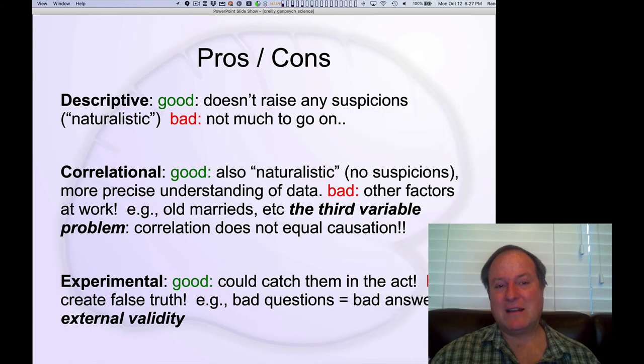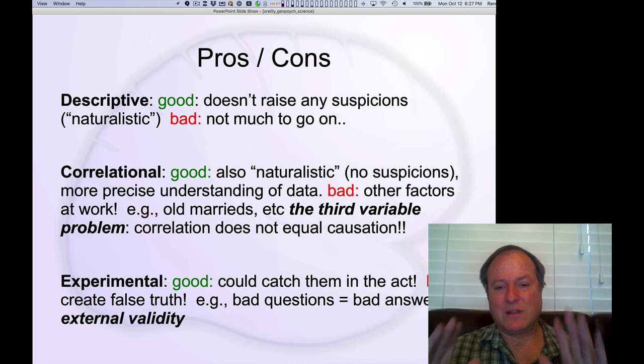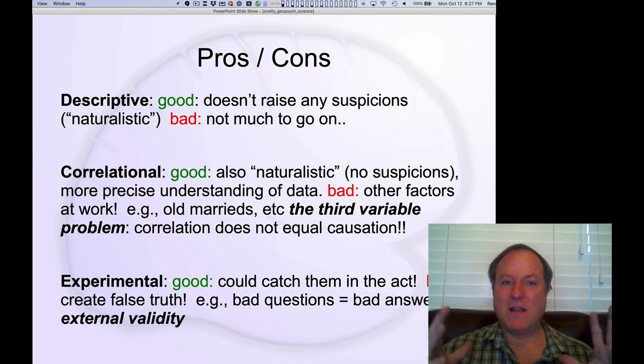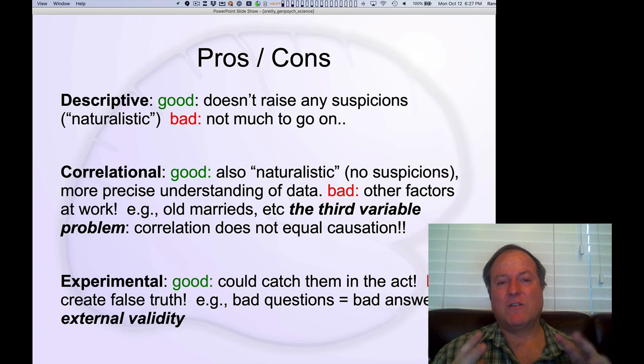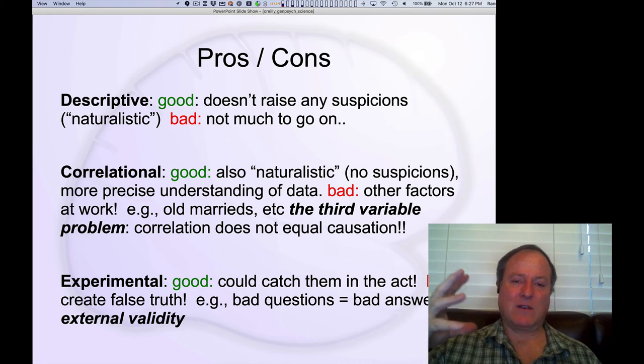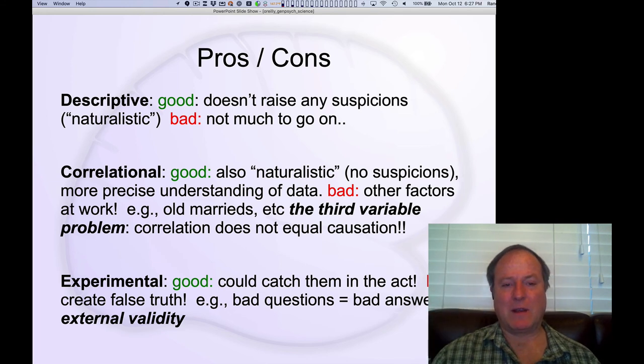So, here's the summary again. If you use these descriptive approaches, you don't disturb. You don't raise suspicions. But you may not have that much to go on. The correlational approach is also somewhat naturalistic. And it gives you a more precise understanding. But of course, you end up with this problem of the third variable problem. Maybe all of these symptoms are just because you've been in this relationship longer. And they're not cheating on you. It's just a natural course of relationships over time. And so, you have to take into account that possible third variable of time itself. And that might be causing the relationship and not the fact that they're actually actively cheating on you.